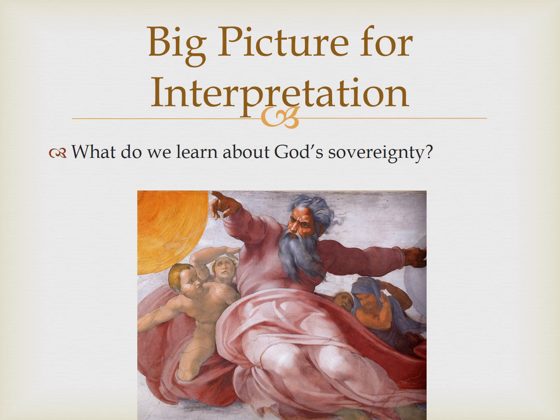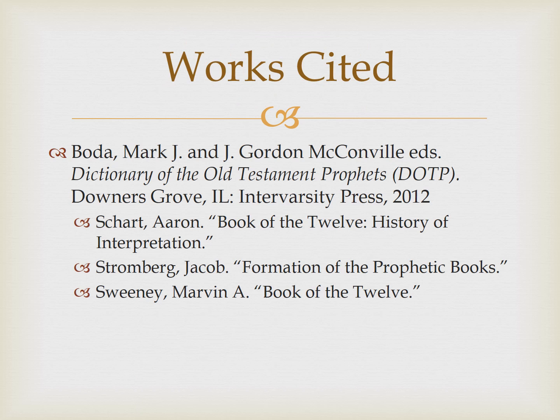The big picture for interpretation is that the twelve writings are connected by message. As we look through Zephaniah and Habakkuk and Hosea and Joel and the like, we should be thinking about what is the one message delivered in different times, by different men, from two different nations, and through all sorts of different circumstances. And if Sweeney is right, the real big question for each book of the twelve is: what is the new lesson, the new aspect, the new facet, the new dynamic of God's sovereignty? Who is he sovereign over? How does he exercise his sovereignty? What are the obstacles to his sovereignty?